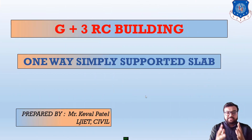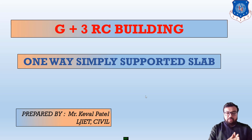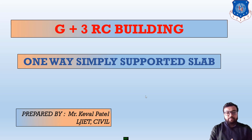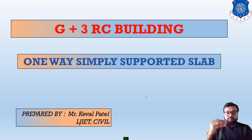Hello everyone, this is the second lecture of our chapter 2, which is G plus 3 RC building. In the last lecture, we completed our introduction section, discussing how to transfer load in any RCC building — the distribution of load from slab to beam, beam to column, and column to footing foundation.